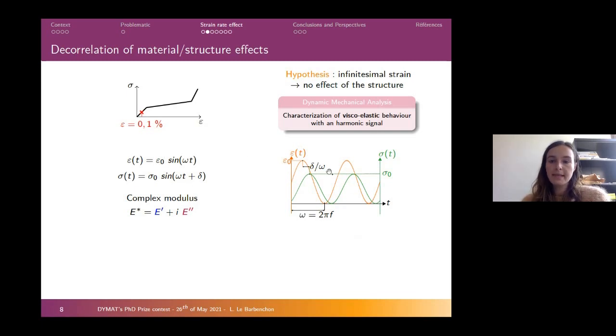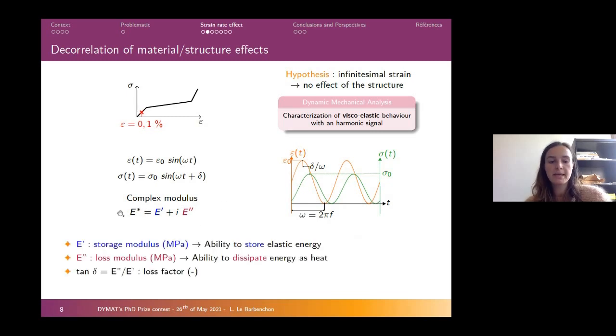We use dynamic mechanical analysis in order to study the time-temperature dependence of this material at small strain. This kind of test, after a harmonic signal, gives us the complex modulus of the material, which is made of the storage modulus, which gives the ability of the material to store elastic energy, and also the loss modulus, which characterizes the ability to dissipate energy as heat. We can then set the loss factor, which represents the ratio of both parameters.